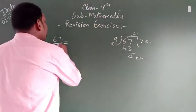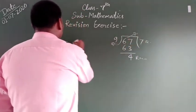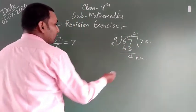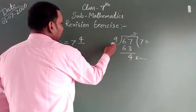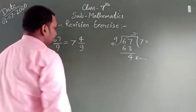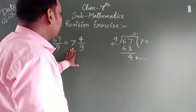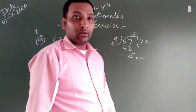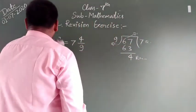We change to mixed fraction. Divide the remainder — the quotient is our whole number. And the remainder is our numerator. And the denominator remains the same. So the mixed fraction is 7 and 4 upon 9, or 7 and 4/9.